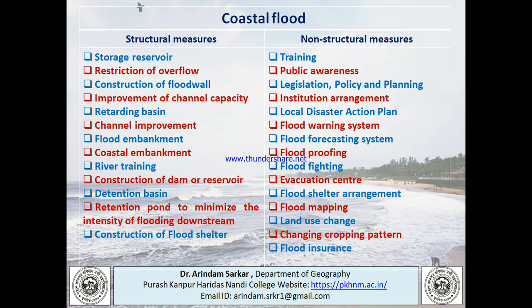Now coastal flood. What are the structural measures for coastal flood? These include storage reservoir, restriction of overflow, construction of flood wall, improvement of channel capacity, retarding basin, channel improvement, flood embankment, coastal embankment, river training, construction of dam and reservoir, detention basin, retention pond to minimize flood intensity toward downstream, and construction of flood shelters.